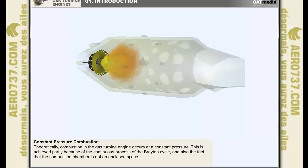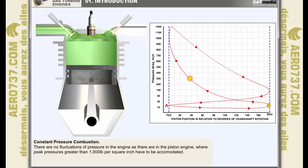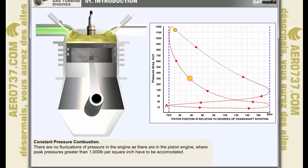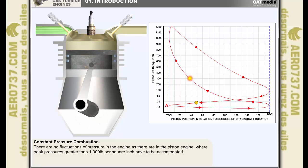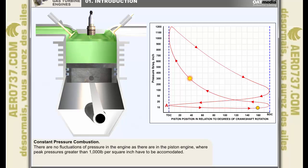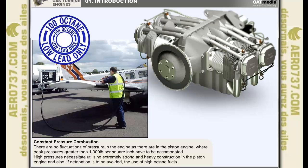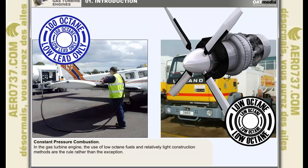As we previously stated, theoretically combustion in the gas turbine engine occurs at a constant pressure. This is achieved partly through the continuous process of the Brayton cycle and also by the fact that the combustion chamber is not an enclosed space. These circumstances ensure that there are no fluctuations of pressure in the engine as there are in the piston engine, where peak pressures greater than 1,000 pounds per square inch have to be accommodated. These high internal pressures necessitate utilizing extremely strong and heavy construction in the piston engine, and also, if detonation is to be avoided, the use of high octane fuels. In contrast, in the gas turbine engine, the use of low octane fuels and relatively light construction methods are the rule rather than the exception.